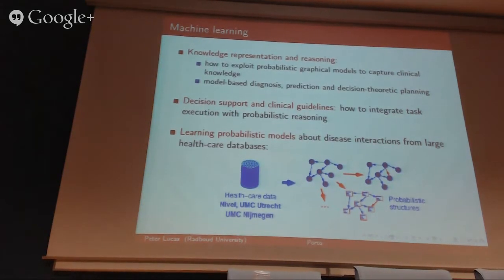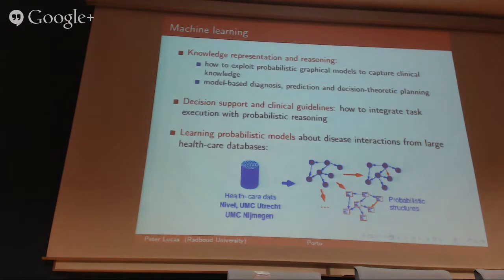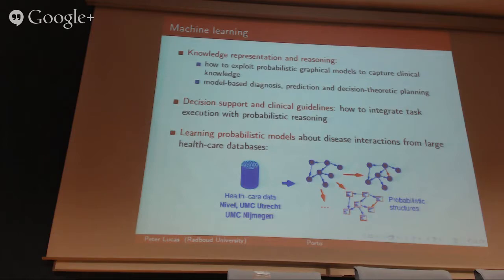Let's go back to machine learning. Given this complicated network situation of diseases, somehow we have to come up with ways to represent that knowledge. I think the idea of using network-like approaches could be a suitable starting point, because you start with the idea that diseases interact with each other. We also have a lot of experience with probabilistic graphical models like Bayesian networks, which we know can be used for clinical problem-solving tasks like diagnosis, prediction, or decision-theoretic planning for treatment.